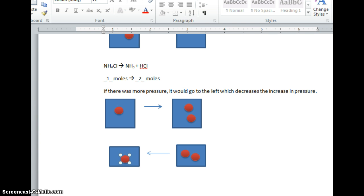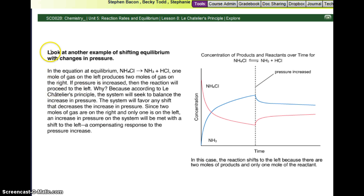So if we look at that same thing, that's what's explained on this slide. Look at another example of shifting equilibrium with changes in pressure. In the equation at equilibrium, NH4Cl yields NH3 plus HCl. 1 mole of gas on the left produces 2 moles of gas on the right. If pressure is increased, so a smaller container is squeezed together, then the reaction will proceed to the left, or creating more of the reactants. Why? Because according to Le Chatelier's principle, the system will seek to balance the increase in pressure. The system will favor any shift that decreases the increase in pressure.